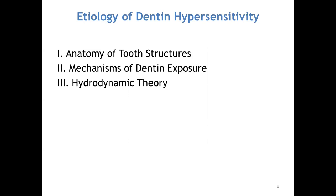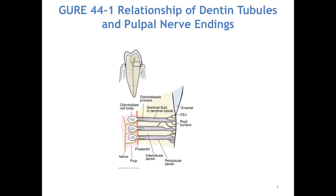Right now the theory that is believed — it's been out for a long time — is the hydrodynamic theory. These dentinal tubules go to the outside; the root surface is on the right side of this picture. You can see where the tubules go from the nerve at the center of the tooth out to the root surface. Within these tubules there is fluid, and this fluid maintains a balance. Whenever that fluid is disrupted there's going to be some sort of sensation — hot, cold.